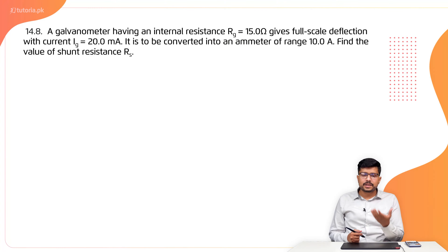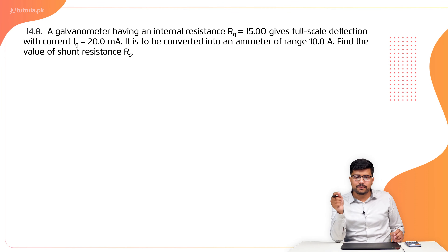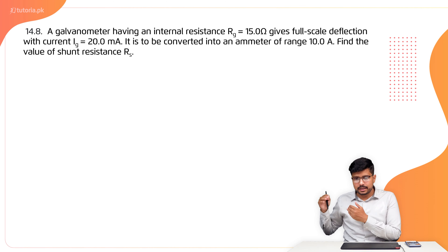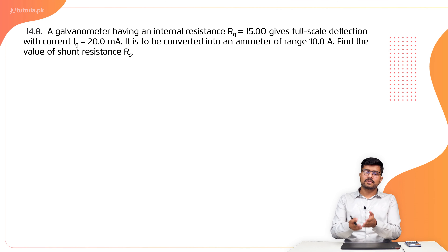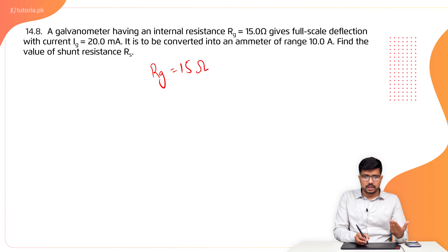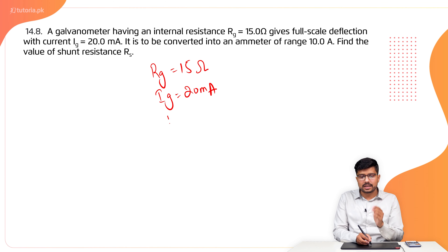We start with numerical number 8. A galvanometer having an internal resistance RG of 15 ohms gives full scale deflection with a current IG of 20 milliamperes. It is to be converted into an ammeter of a range of 10 amperes. Find the value of the shunt resistance. The given data is: RG = 15 ohms, IG = 20 milliamperes, and the ammeter current I = 10 amperes.